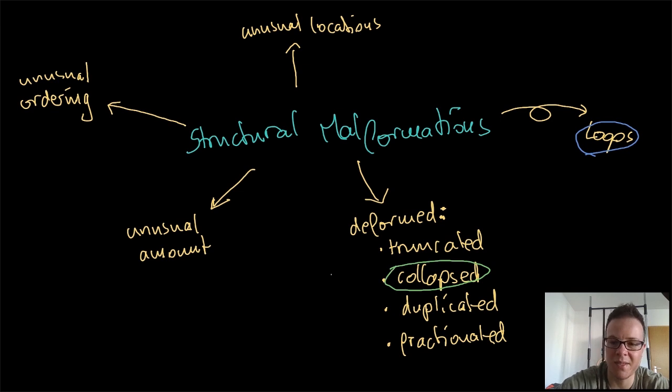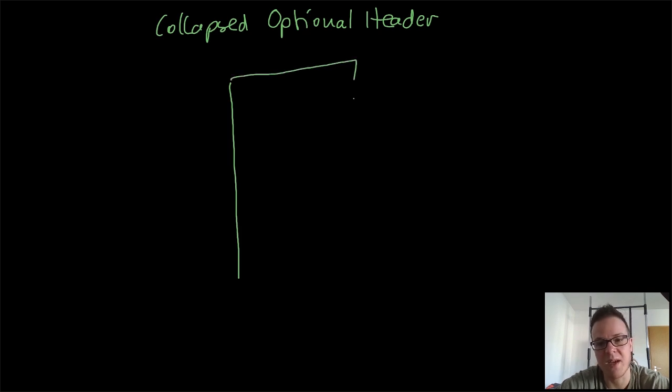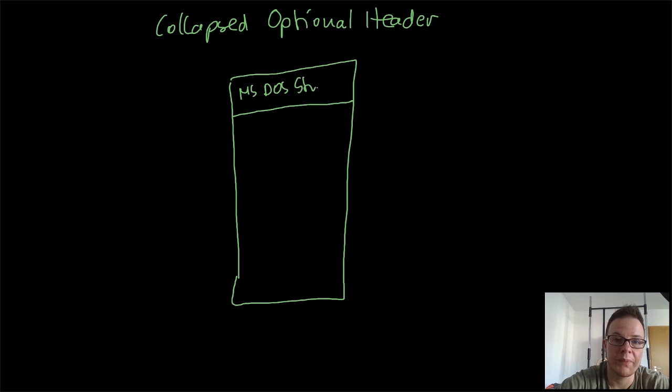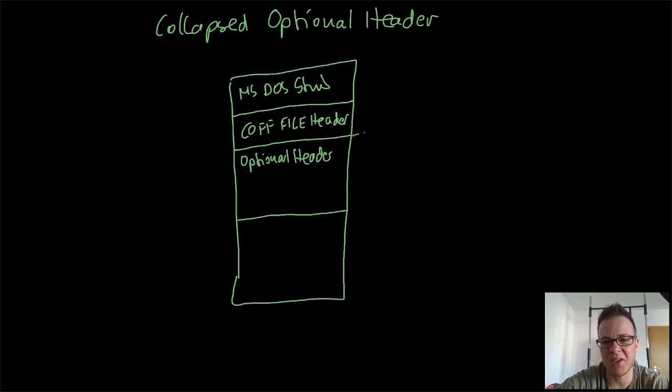Another example is the collapsed structure. Let's take a look at the collapsed optional header. By the way, if you're interested in these anomalies, check out Ange Albertini. I will put a link in the description below because he has made lots of proof of concept files for portable executable malformations. So the collapsed optional header is also used by TinyPE, I think. If we have the normal PE file, we have an MS-DOS stub, we have the COFF file header, then comes the optional header and after that the section table.